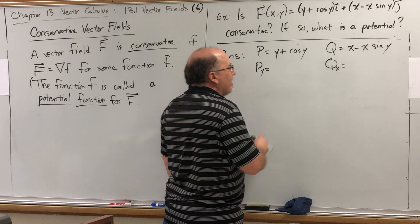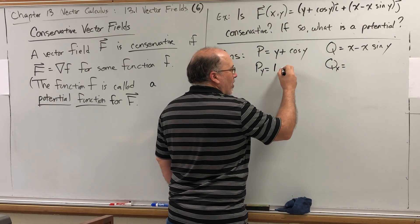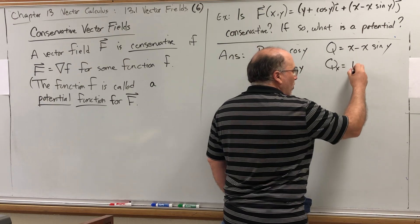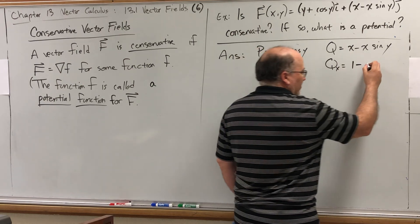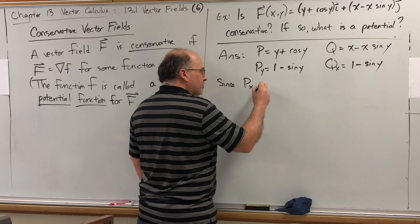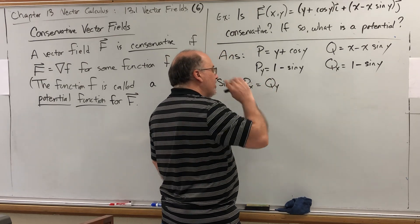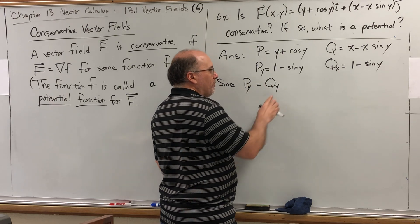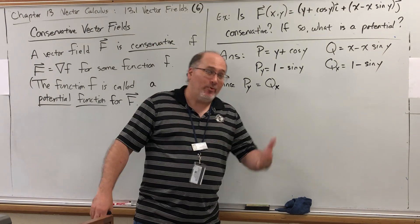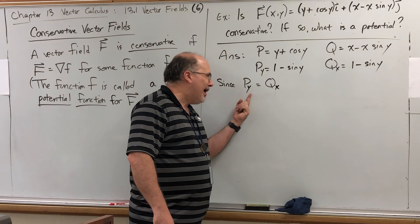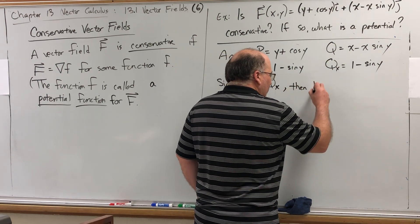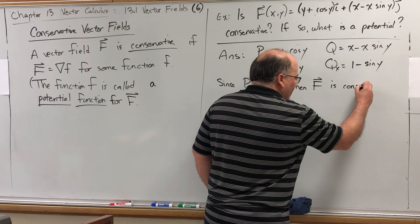Our P function is the component function for I: Y plus cosine of Y. Our Q function is the component function for J: X minus X sine Y. To check if this is a conservative vector field, we take the partial derivative of P with respect to Y and the partial derivative of Q with respect to X, and see if we get the same thing. With respect to Y: the derivative of Y is 1, and the derivative of cosine Y is negative sine Y — giving 1 minus sine Y. With respect to X: the derivative of X is 1, and the derivative of negative X sine Y is negative sine Y — also giving 1 minus sine Y. They're equal. Since the partial derivative of P with respect to Y equals the partial derivative of Q with respect to X, the vector function capital F is conservative.